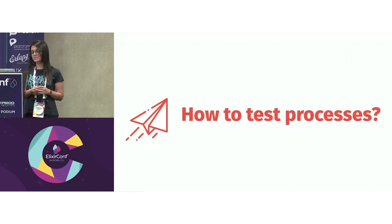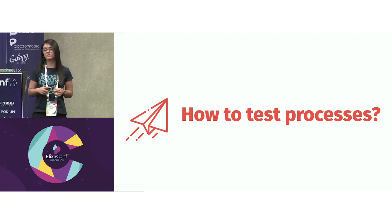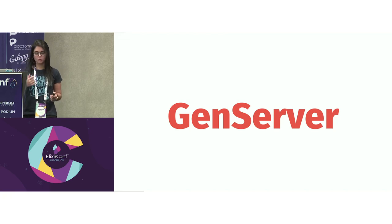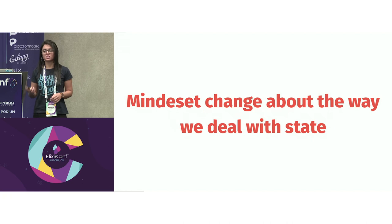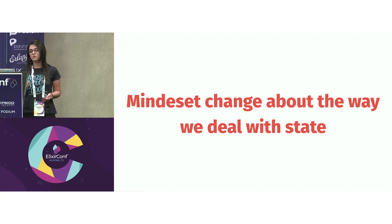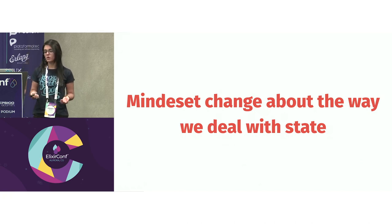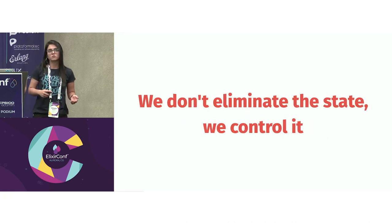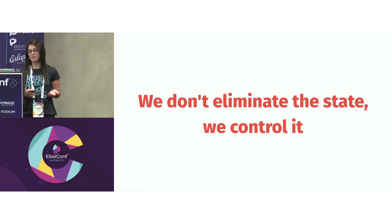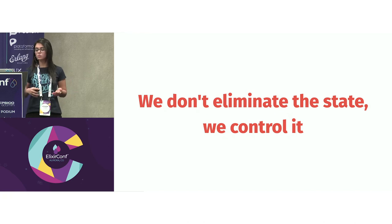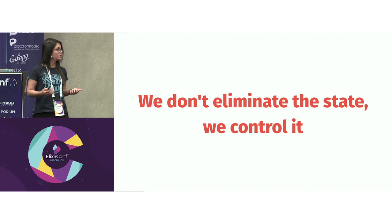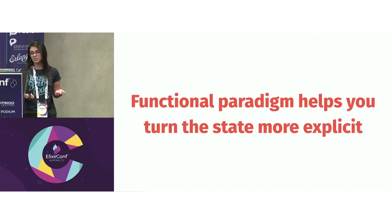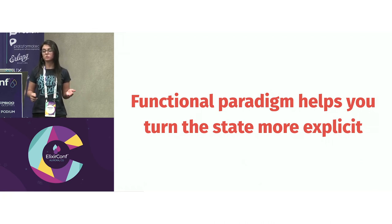How do we test processes? The concurrency in Elixir is one of its strongest characteristics, and a lot of this happens through message exchange between processes. There is this module called GenServer — it's one of the abstractions to control state and deal with processes. It's kind of a mindset change about the way we deal with state in functional programming. In object-oriented, we are used to having state in objects, and we don't have objects in functional programming. Functional programming doesn't eliminate state — we control it. Any application we write needs to store state somewhere. The functional paradigm helps you make state more explicit — it imposes some ceremonies to change and manage state.